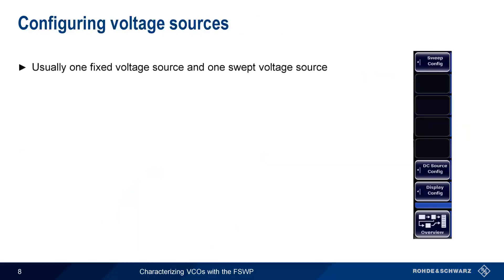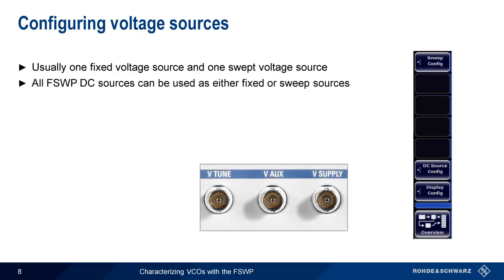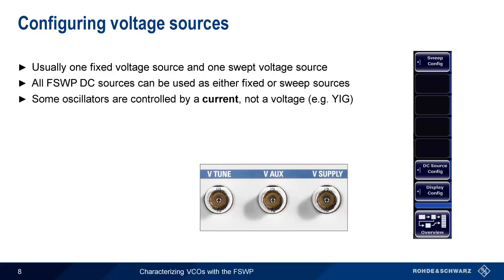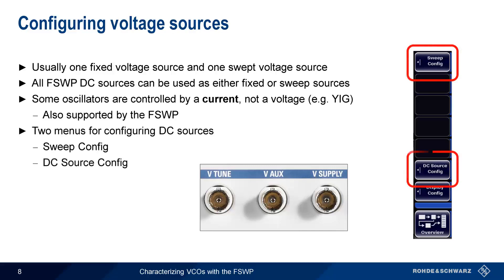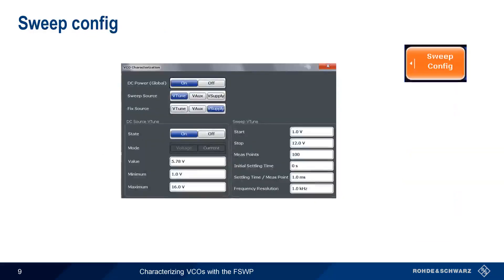VCO characterization usually involves two DC voltage sources: one fixed source and one tunable or swept source. All of the DC sources on the FSWP can be configured as either a fixed or a sweep source. As an aside, there are some types of oscillators, such as YIG oscillators, that are controlled by a current rather than by a voltage, and this is also supported by the FSWP. Voltage sources on the FSWP are configured in two different ways: sweep configuration and DC source configuration. Sweep configuration is where DC power is enabled or disabled globally — note that all sources are off when the application is started. We also use this dialog to configure which connector provides the fixed supply voltage and which provides the sweep voltage.